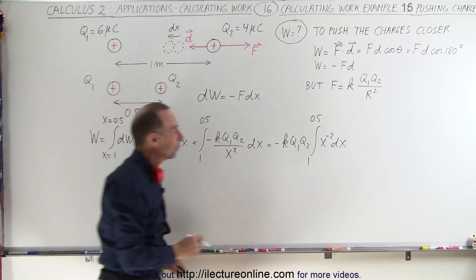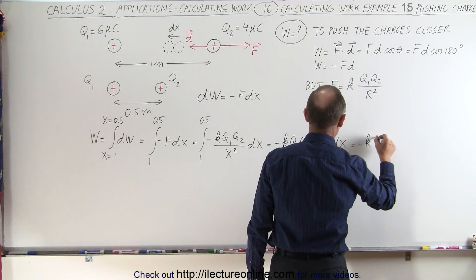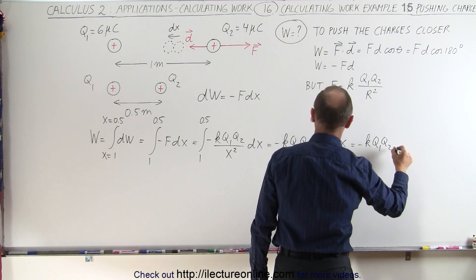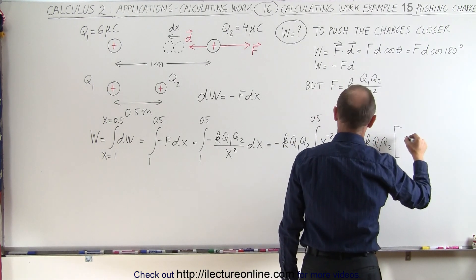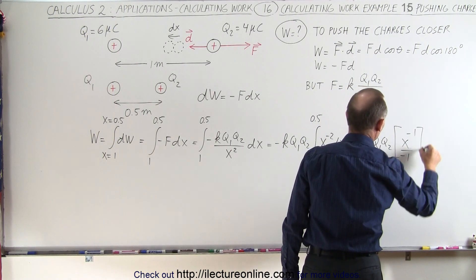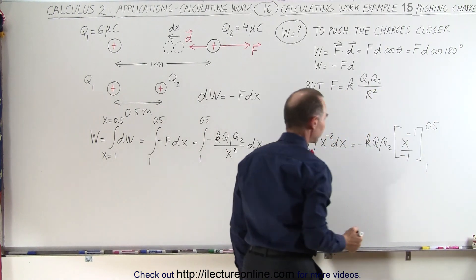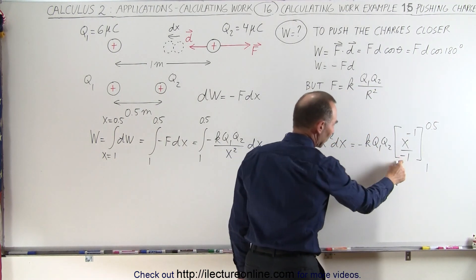So we'll integrate that. We get x to the minus 1. So this is equal to minus kq1q2 times x to the minus 1 divided by the new exponent minus 1 evaluated from 1 to 0.5. Notice that this negative will cancel out that negative.